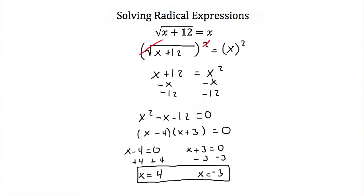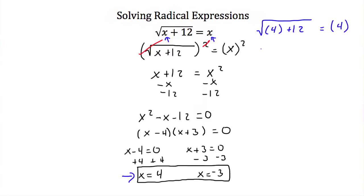Since we squared both sides earlier, we always have to check our answers. First, checking x = 4: we have the square root of 4 plus 12, which should equal 4. Now 4 plus 12 is 16, and the square root of 16 is 4. So 4 equals 4 — x = 4 is a valid solution.